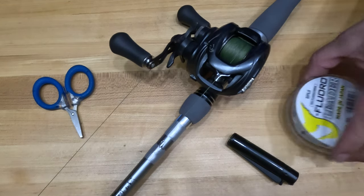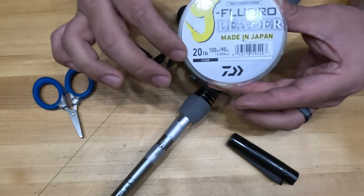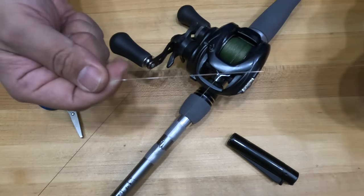The FG knot that I tie is used for connecting fluorocarbon to braided line. Today I'm using 20 pound fluorocarbon to add to my pitch and flip setup.